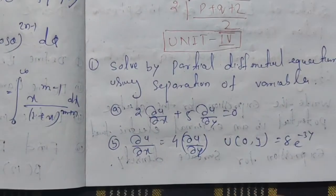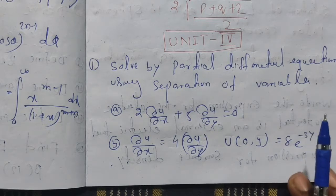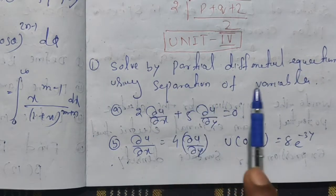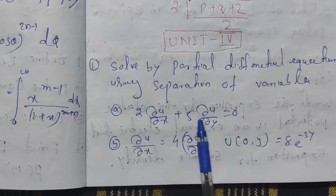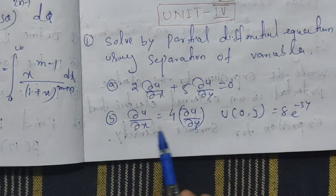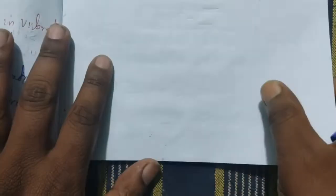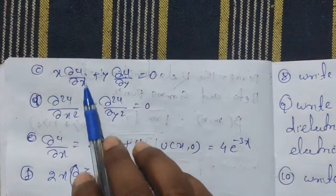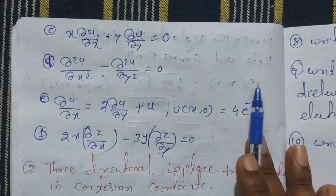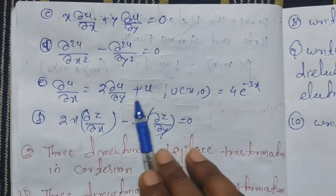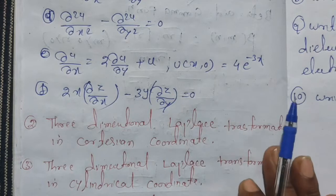Unit 4 is very important — it is based on partial differential equations. Solve the PDE using the variable separation method: 2(∂u/∂x) + 5(∂u/∂y) = 0; ∂u/∂x = 4(∂u/∂y), u(0,y) = 8e^(−3y); x(∂u/∂x) + y(∂u/∂y) = 0; ∂²u/∂x² − ∂²u/∂y² = 0; 2x(∂z/∂x) − 3y(∂z/∂y) = 0.